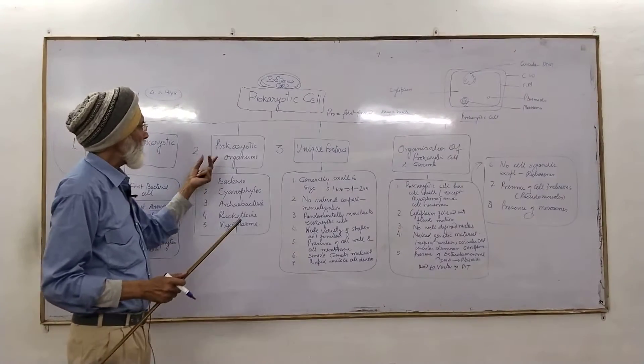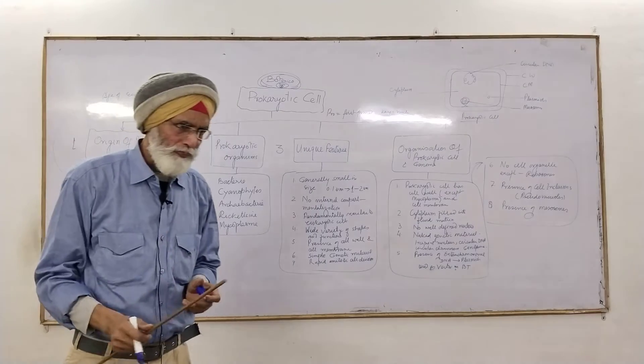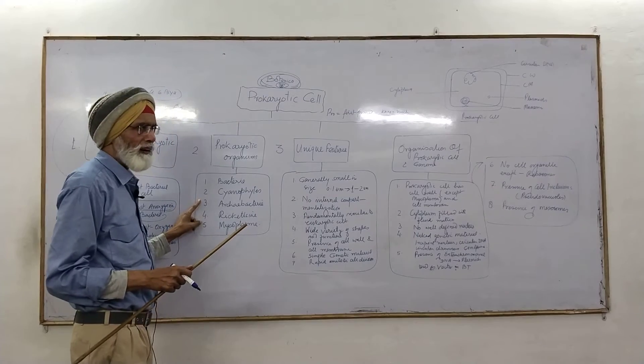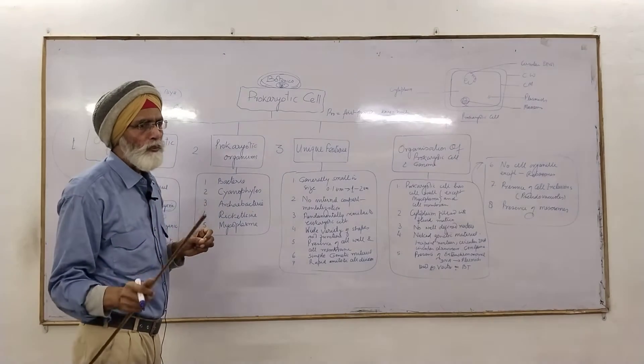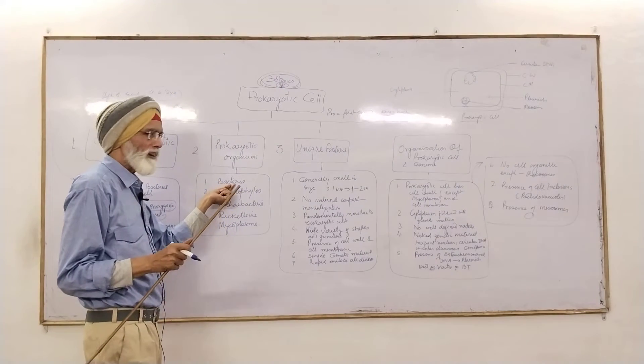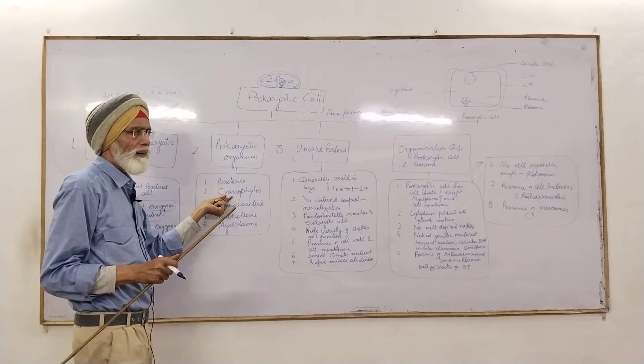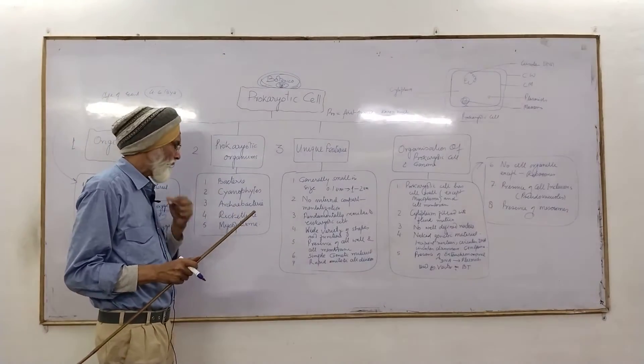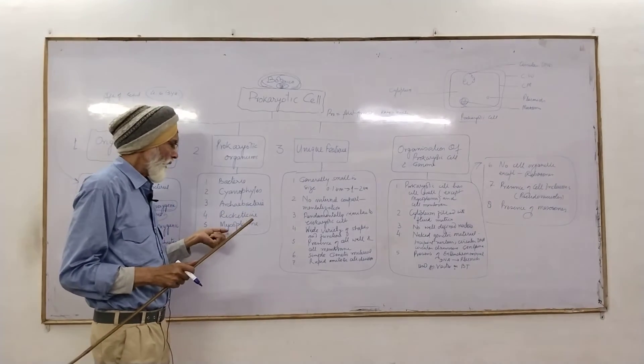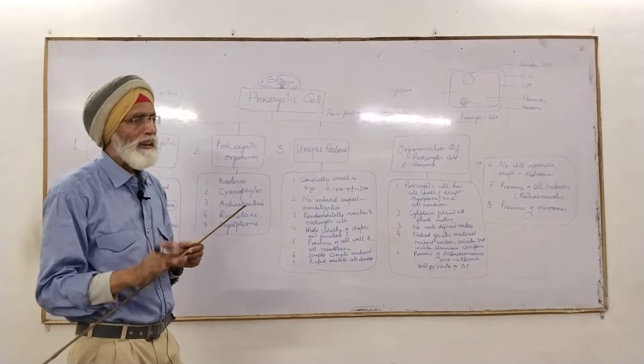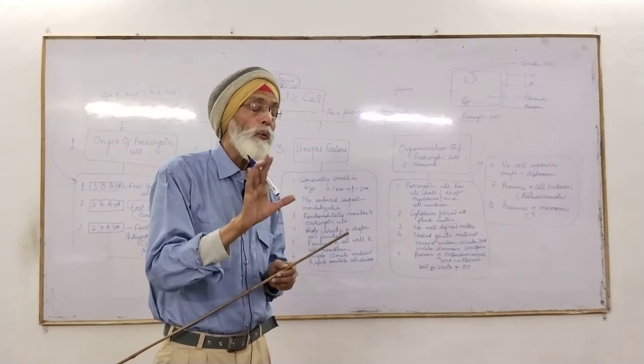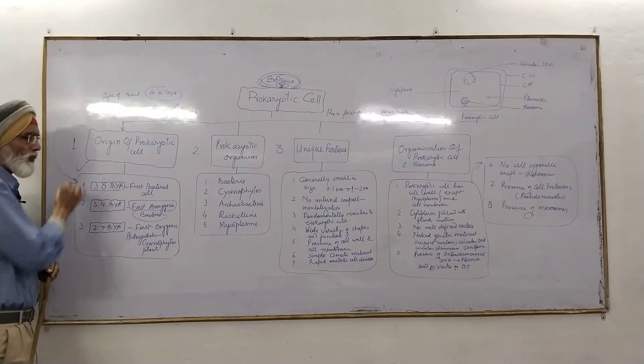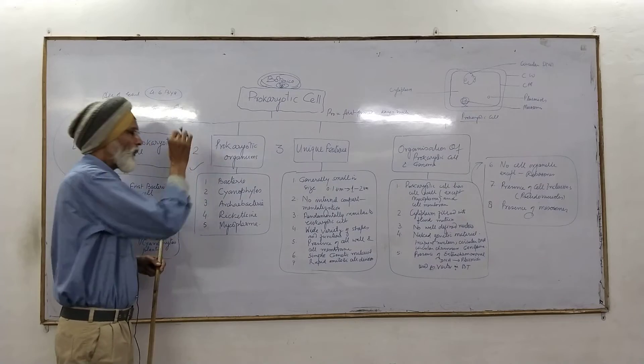What are the examples of prokaryotic organisms? A very important question for you, that you have to remember. These are the following five categories, which all belong to prokaryotic cell. The first one is bacteria. And then cyanophytes, so called cyanobacteria, but actually they are plant. And archaebacteria, these are also ancient bacteria. And the rickettsiae, these are disease-causing prokaryotes. And mycoplasma is the smallest living cell, so called PPLO.